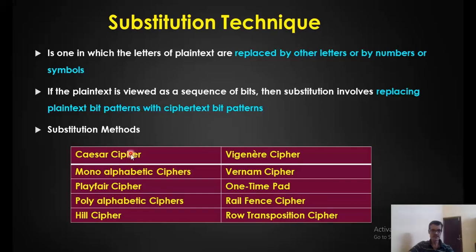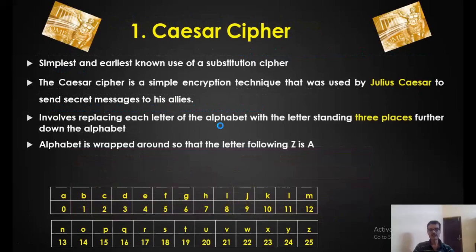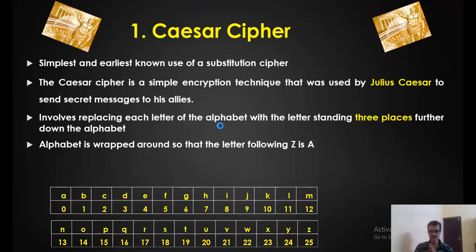In this video let us discuss in detail about Caesar Cipher, which was in fact used by Julius Caesar. In early days when he used to transmit a text message in cryptic language to neighboring countries or friendly nations, he used to use this particular technique. That is why the same method is called Caesar Cipher.